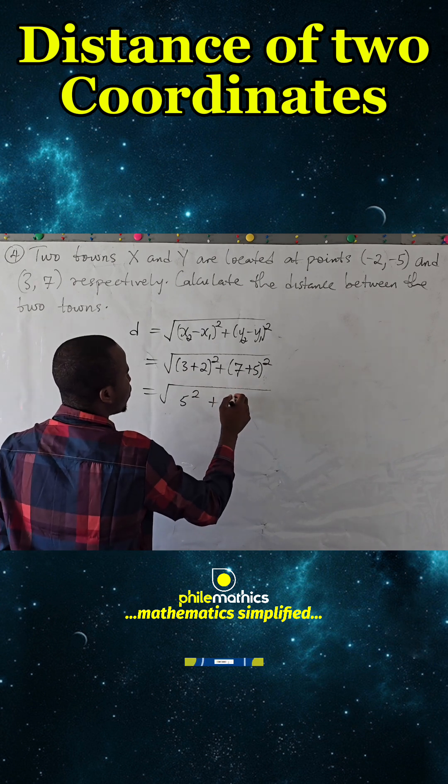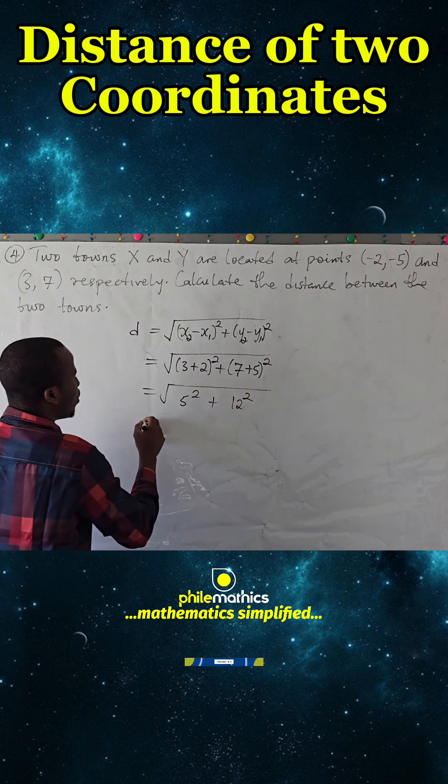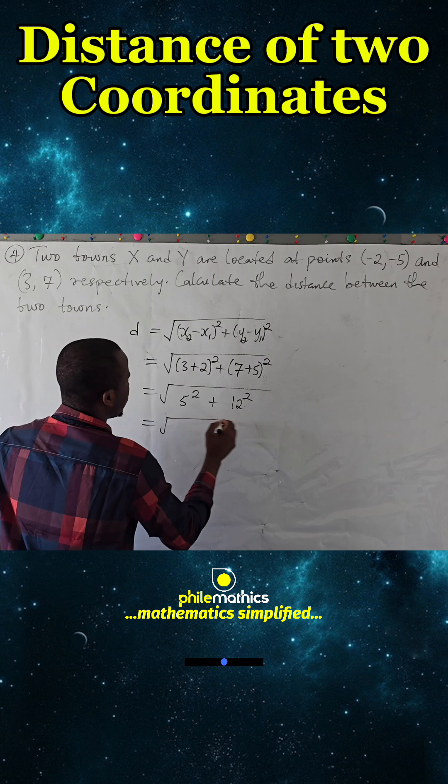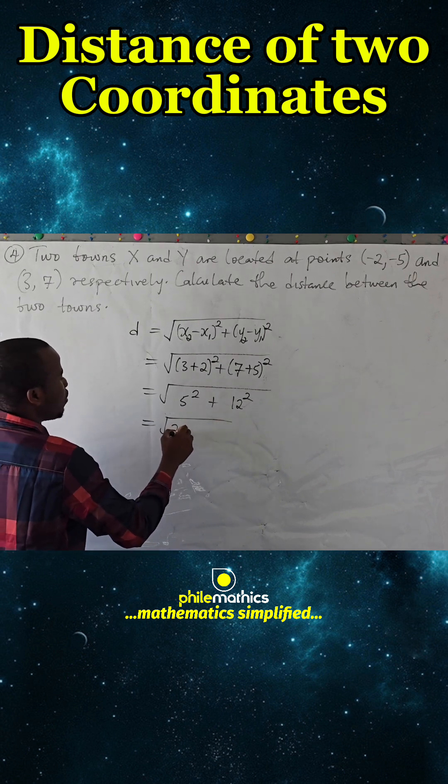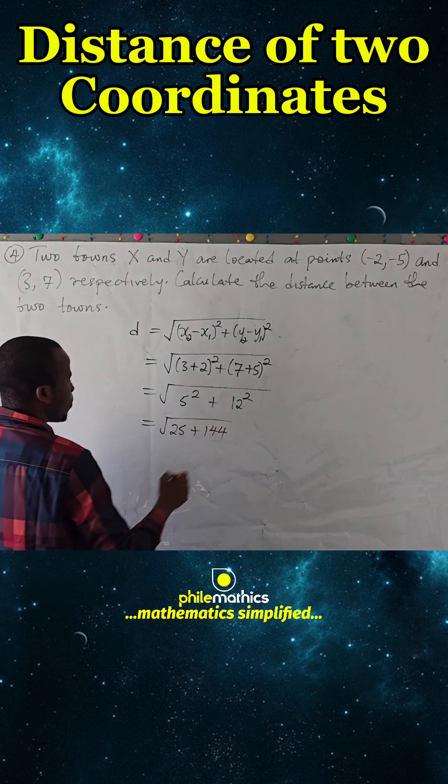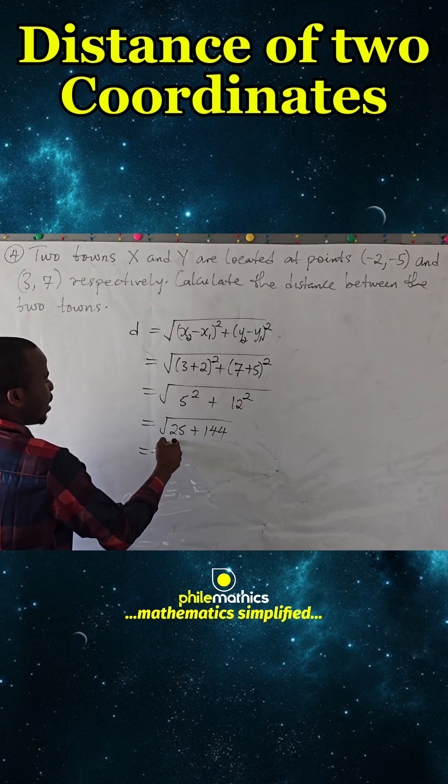If we take this: 5 squared is 25, and 12 squared is 144. If we add this: 25 plus 144 is 169.